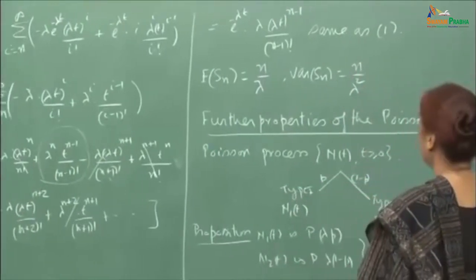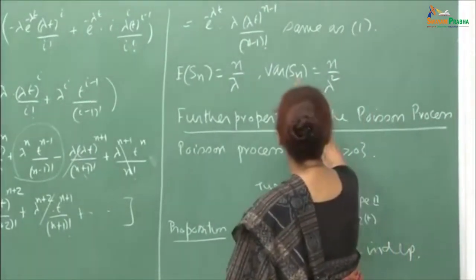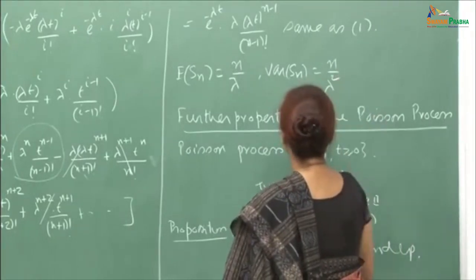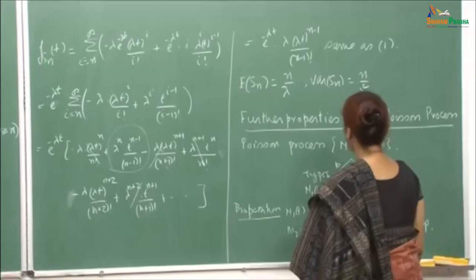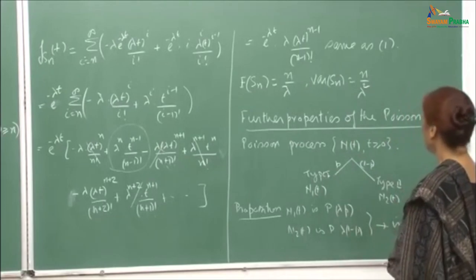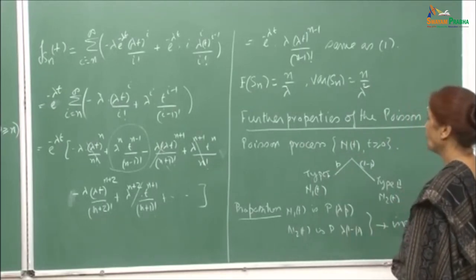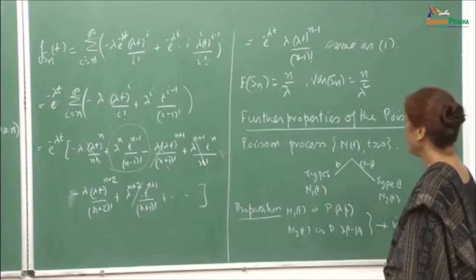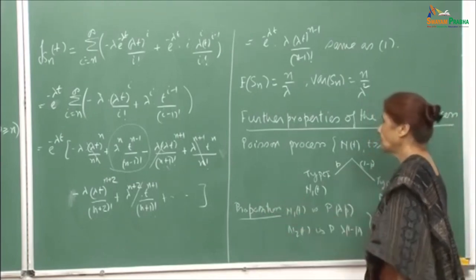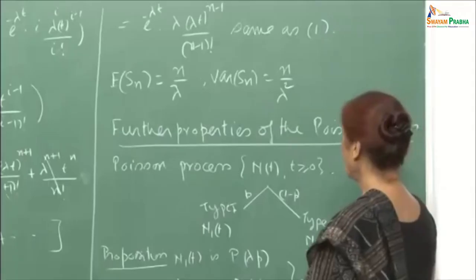Therefore E[S_n] = n/λ and Var(S_n) = n/λ². We will now prove some more properties of the Poisson process and work out examples to show how to use this machinery.